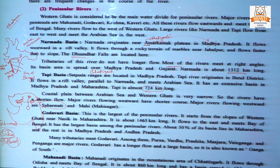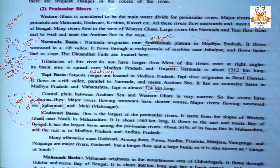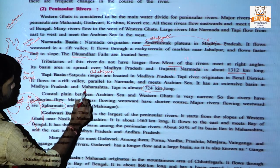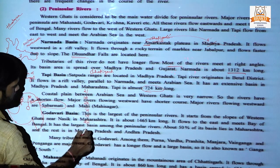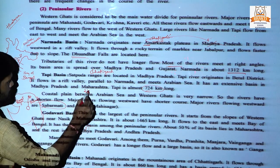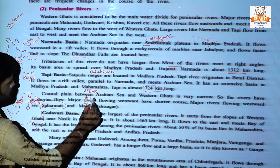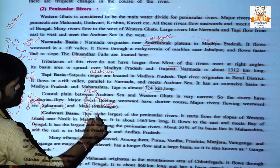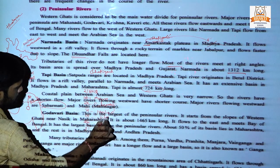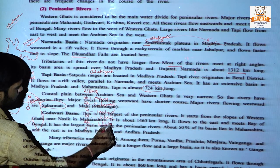The tributaries of Sabarmati can be remembered with a trick: Haa Maa Sa Maa Haa Se — meaning Hathmati, Mazam, Sabarmati, Mazam, Shahari, and Sherdi are among its tributaries.